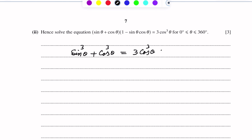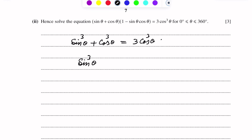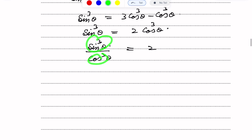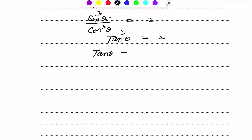Now we bring like terms to one side. The 3 cos cubed and cos cubed terms combine, giving sin cubed theta equals 2 cos cubed theta. By cross-multiplying, sin cubed theta over cos cubed theta equals 2, which becomes tan cubed theta equals 2. Taking the cube root of each side, we get tan theta equals 2 to the power one-third.